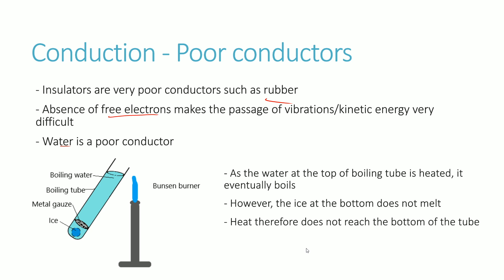Water is also not a very good conductor. In this experimental setup, the test tube has boiling water at the top heated by a Bunsen burner, with a metal gauze separating ice placed at the bottom. Although the top starts to boil, the ice never really melts — showing that heat isn't being transmitted down to the bottom. If water were a good conductor, the ice would clearly begin to melt, but the fact that it doesn't confirms water is a fairly poor conductor.